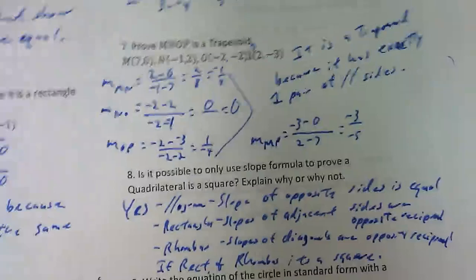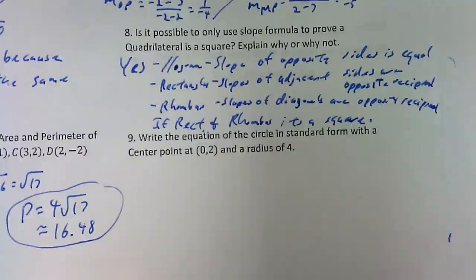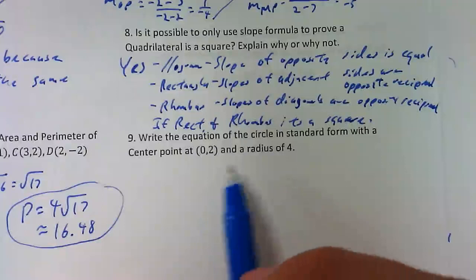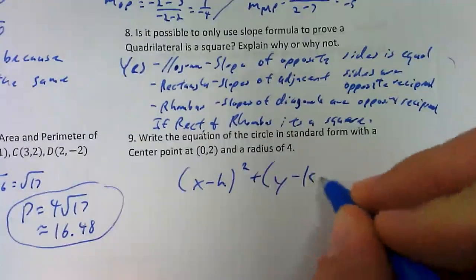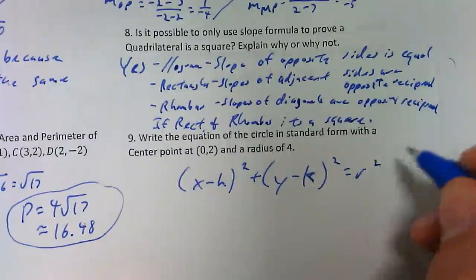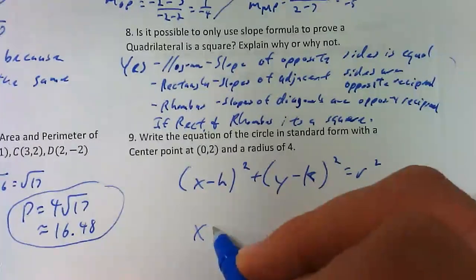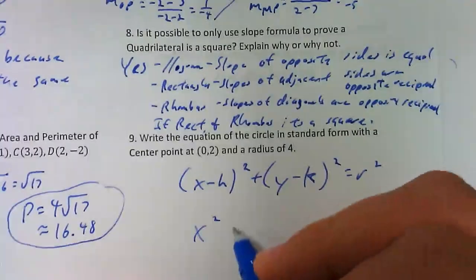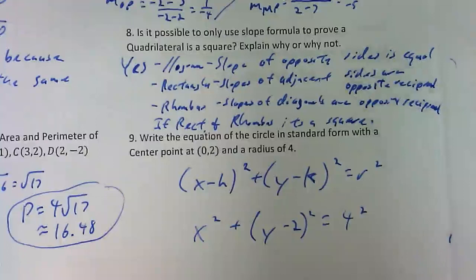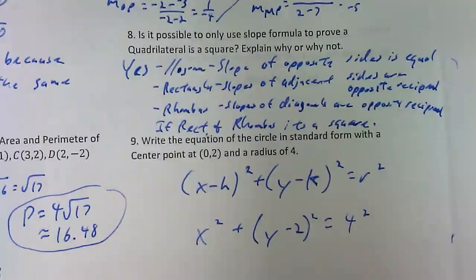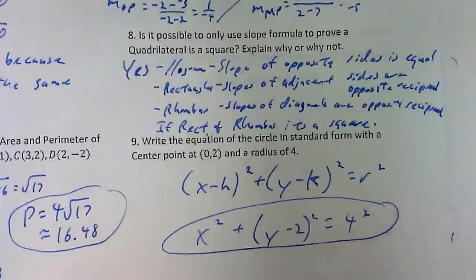From number 9 on it gets a little easier - I think the circle stuff is much easier than the triangles and quadrilateral work. Number 9: write the equation of a circle in standard form. They give us a center point and a radius. The equation of a circle is (x minus h) squared plus (y minus k) squared equals r squared. Plugging in: x minus 0 is just x squared, then (y minus 2) squared equals the radius squared.